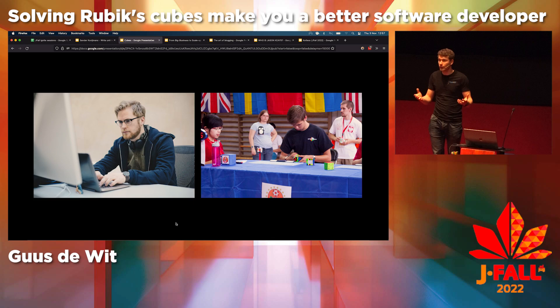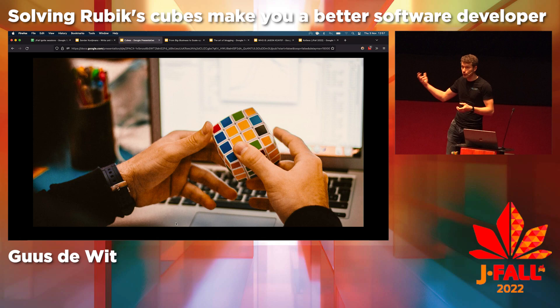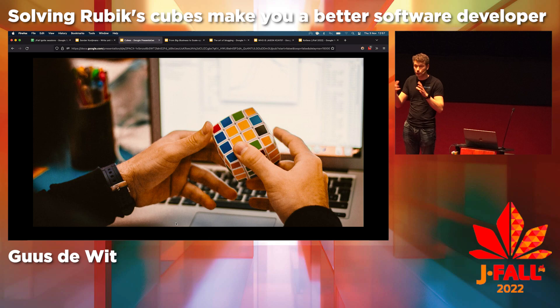In software, going to production means you start programming and earn money. With cubing, you can go to competition and earn lots of street cred. But that might be a step too far when you're just starting out. There's an easier way to start using a Rubik's Cube right now: use it as a tool to take more breaks from coding. Coding can be exhausting, and cubing can be a way to get some mental energy back — it's really relaxing, you can do it anywhere, and it doesn't involve any screens.